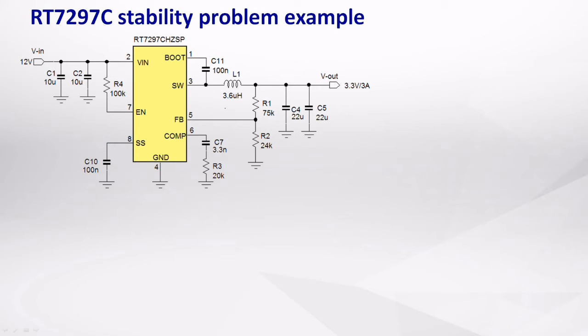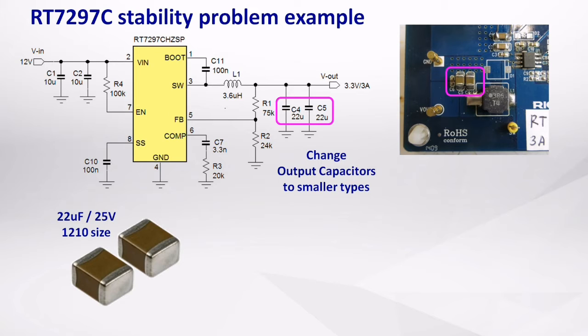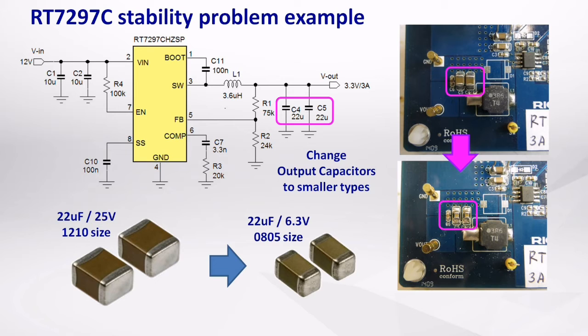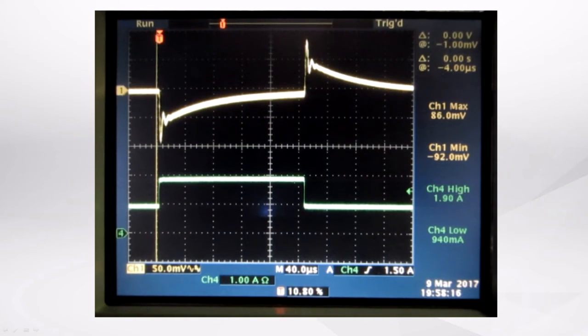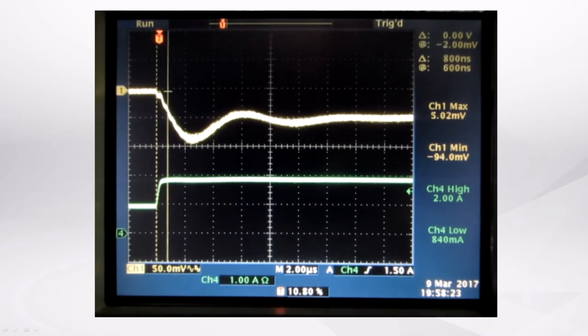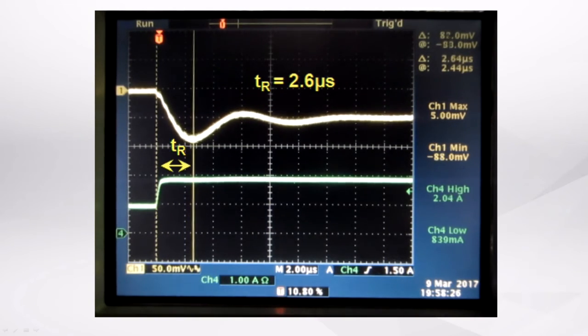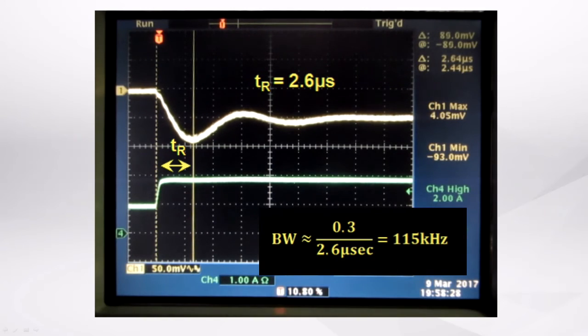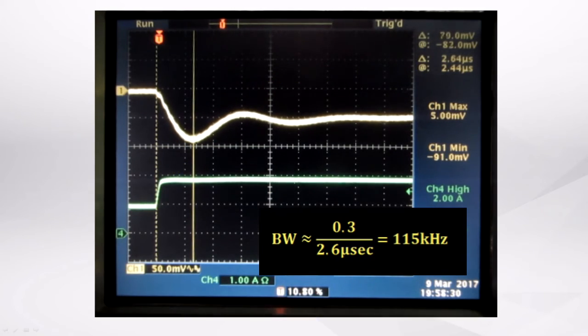Current mode buck converter stability problems are often related to the converter output capacitance value. Here is an example of what happens when you change the original two larger 22µF 25V output capacitors into two smaller 22µF 6.3V types. You now see that the step response shows severe ringing, which means low phase margin. The converter response time has reduced to 2.6 microseconds, so the converter bandwidth has increased to around 115 kHz, which is really high for an 800 kHz converter.